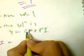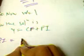Now the solution is: y = CF + PI (particular integral). In this case, PI is equal to y1·u + y2·v.